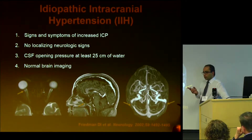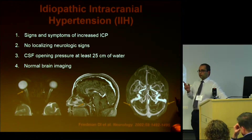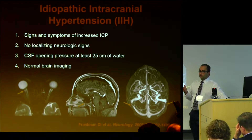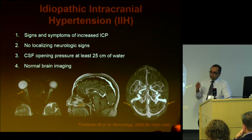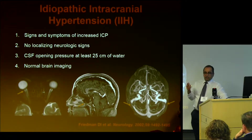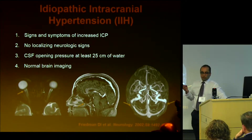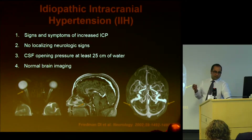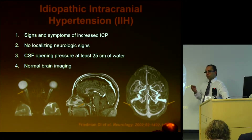The model we're using is a condition that has none of those — idiopathic intracranial hypertension, formerly known as pseudotumor cerebri. This is seen in young, typically obese females and presents with headaches, visual disturbances, and occasionally a sixth nerve palsy, but does not have any of those MRI findings — no intracranial mass, no hydrocephalus, no venous sinus thrombosis. Diagnostically, we look for signs of elevated ICP and a CSF opening pressure of 25 or more centimeters water.